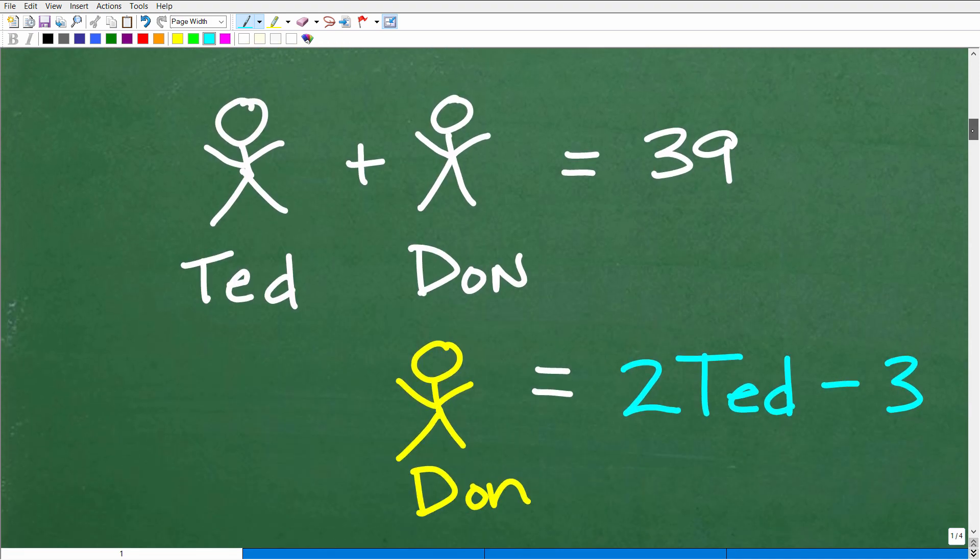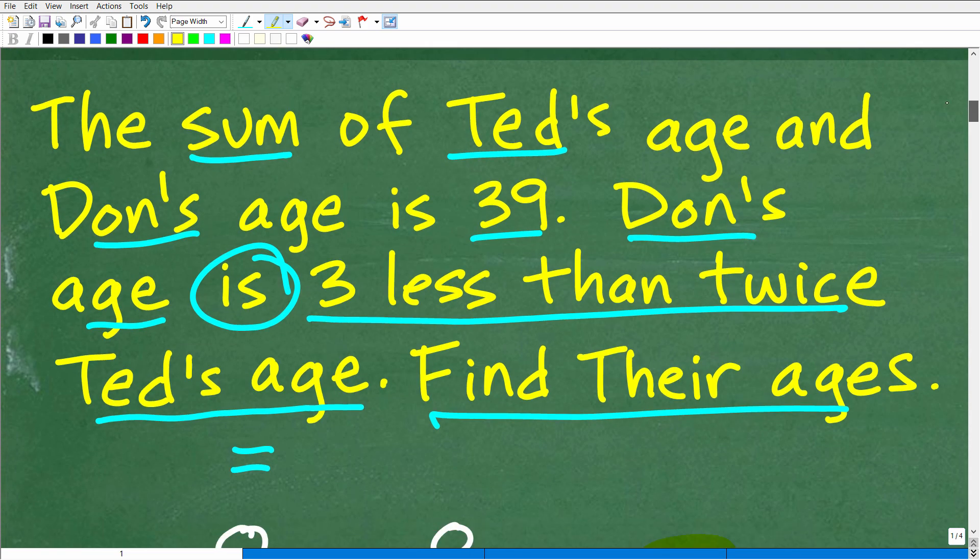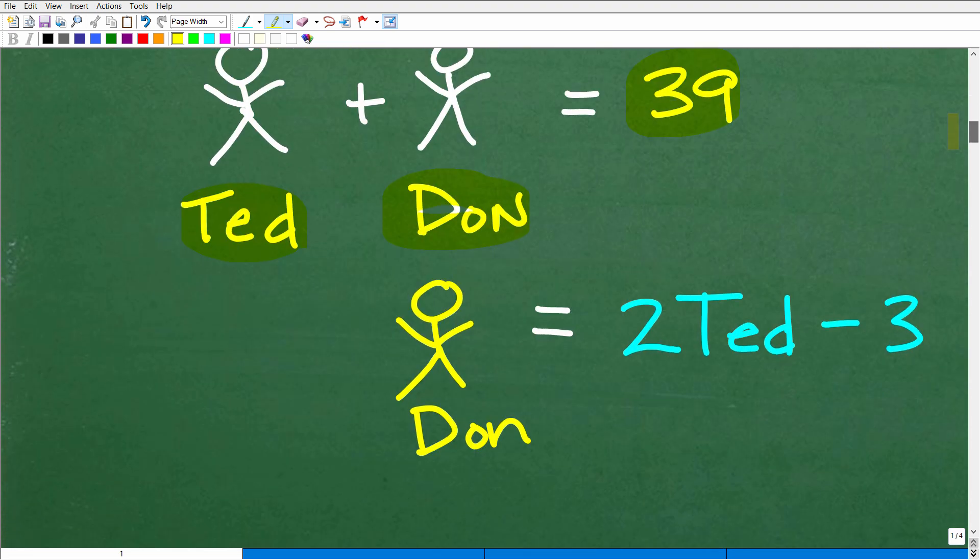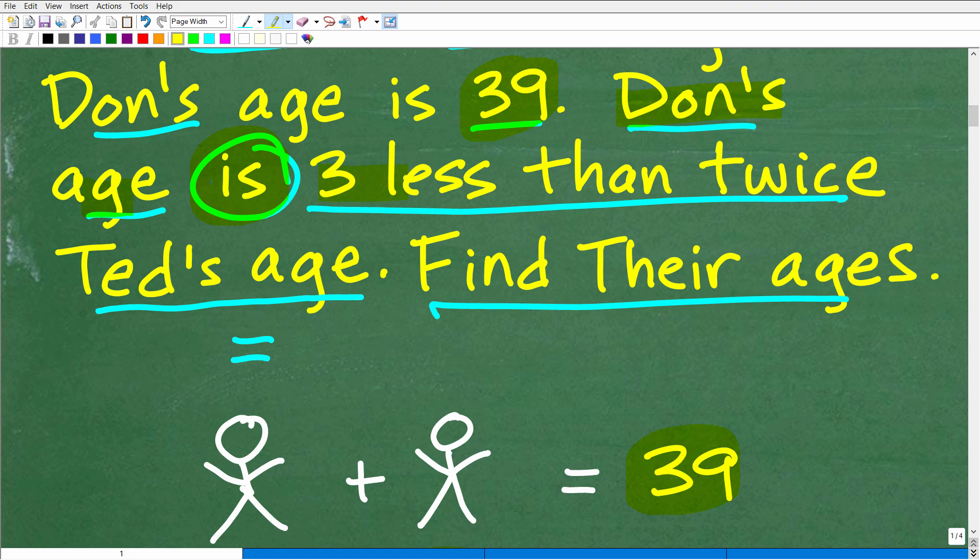So with all this information, the objective is we want to find their respective ages. So let's go ahead and start thinking about this, come up with some sort of model. And I kind of like to use stick figures, but you can use any other kind of way to help you organize the information. So we know that Ted and Don, their ages, their combined ages is 39, right? The sum of their ages, the sum of Ted's age, Don's age is 39. And then here we know that Don's age is or is equal to.